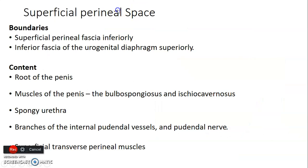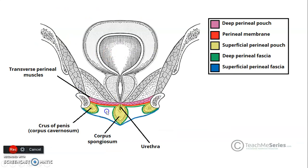The superficial perineal space is formed by the superficial perineal fascia inferiorly and the inferior fascia of the urogenital diaphragm superiorly. It contains the root of the penis, muscles of the penis like bulbospongiosus and ischiocavernosus, the spongy urethra, branches of internal pudendal vessels and pudendal nerve, as well as the superficial transverse perineal muscles. The deep pouch lies above this space.